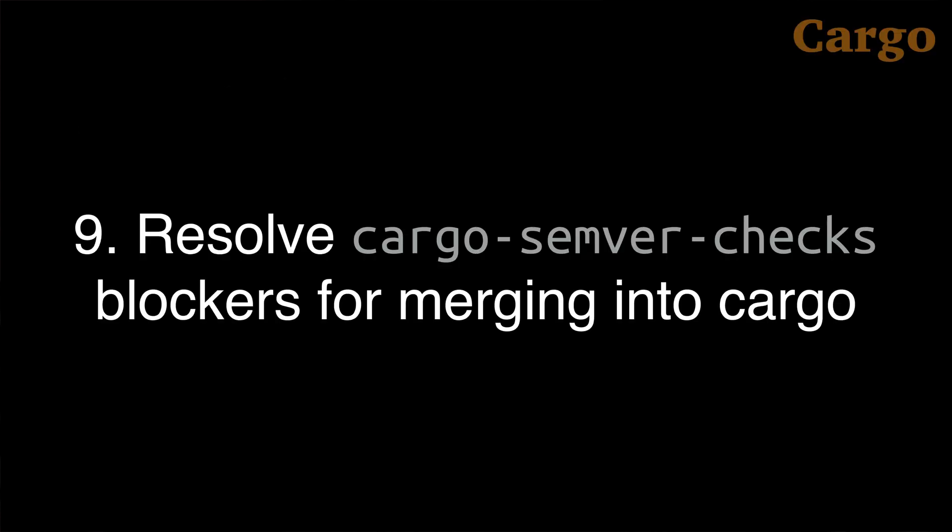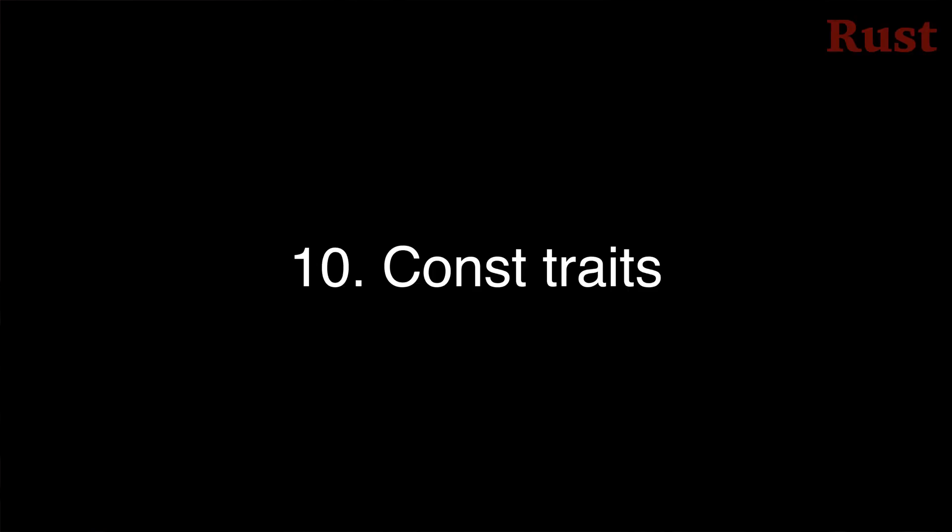Project 9 resolves some of the blockers preventing merging the cargo-semver-checks tool into cargo itself, making it easier to merge in the future. Cargo-semver-checks is a tool that uses rustdoc to determine what sort of version bump you need, as per semantic versioning requirements. Project 10 experiments with effects-based desugaring for maybe-const functionality — another small step towards a better effects system and less divide between const and non-const.